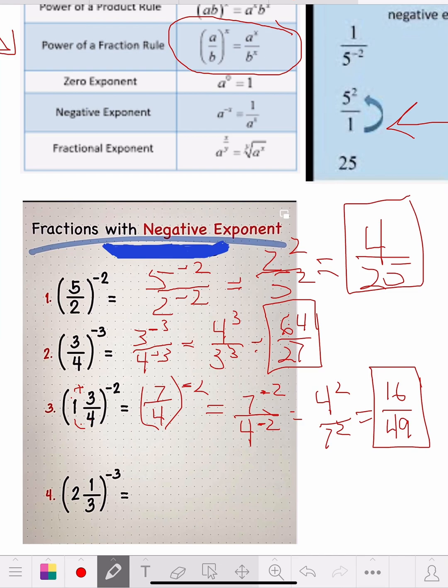Now the next one. So the next one, we go 3 times 2 is 6 plus 1 is 7. So we get 7 thirds, put this in the brackets, to the negative 3.